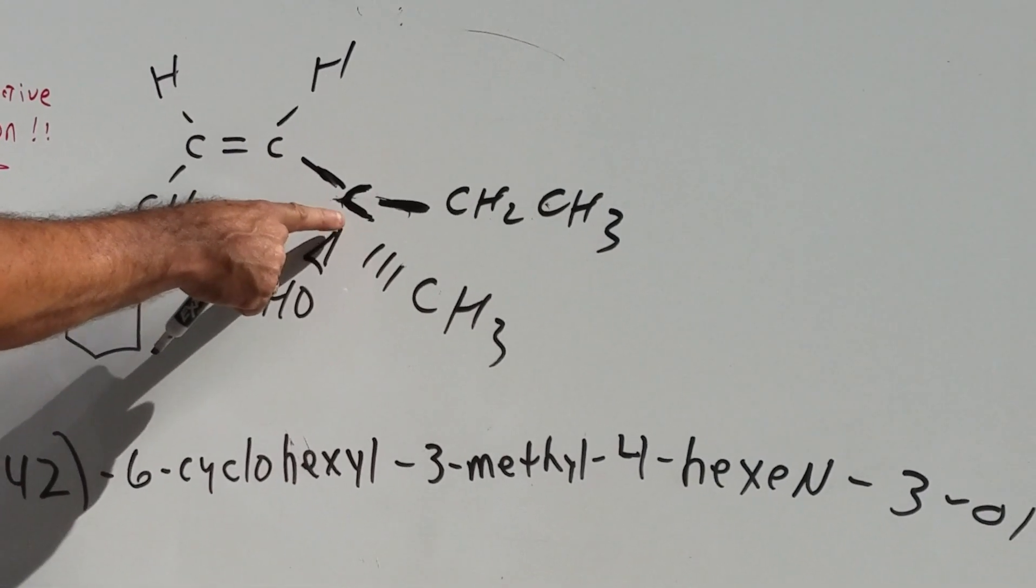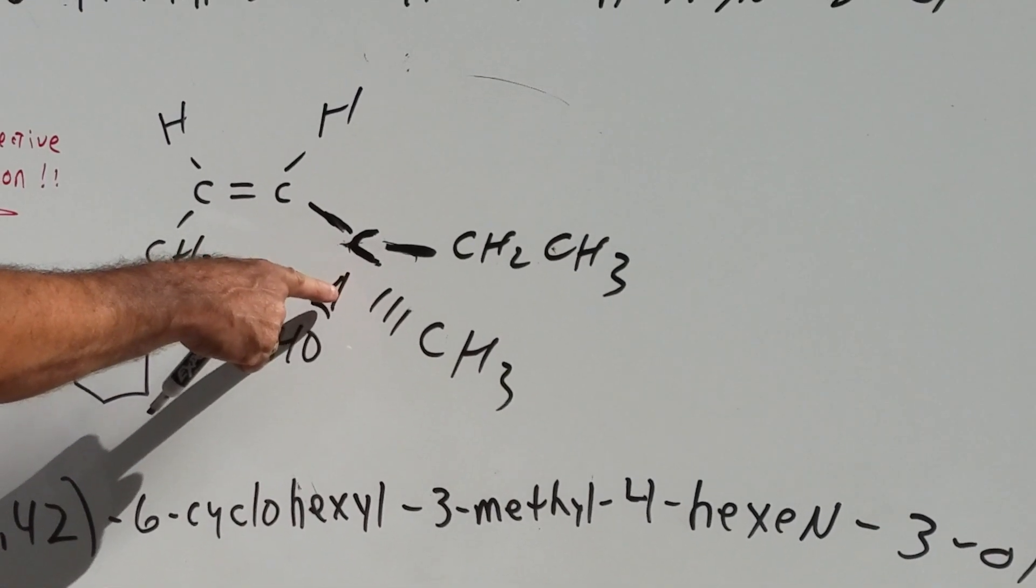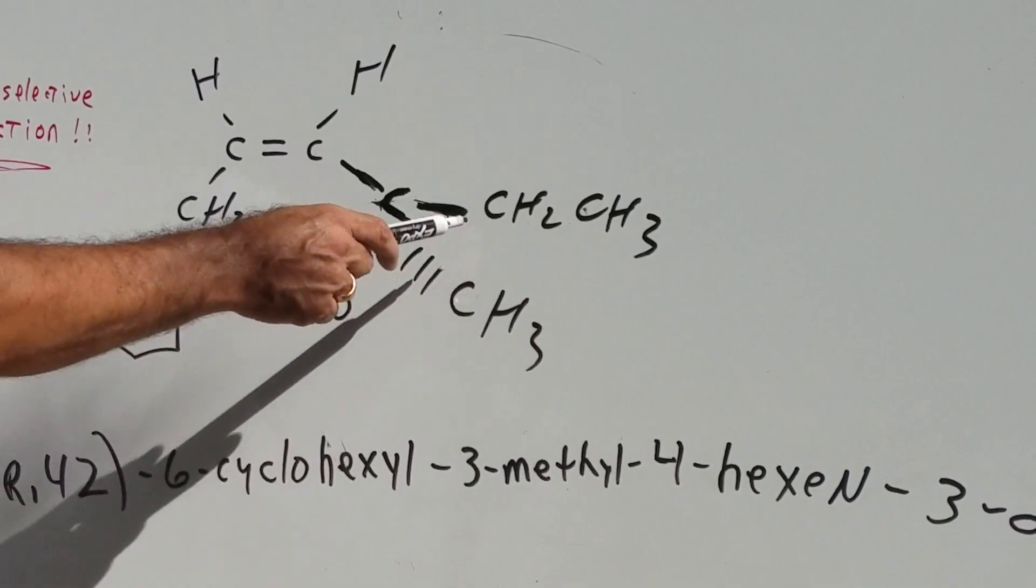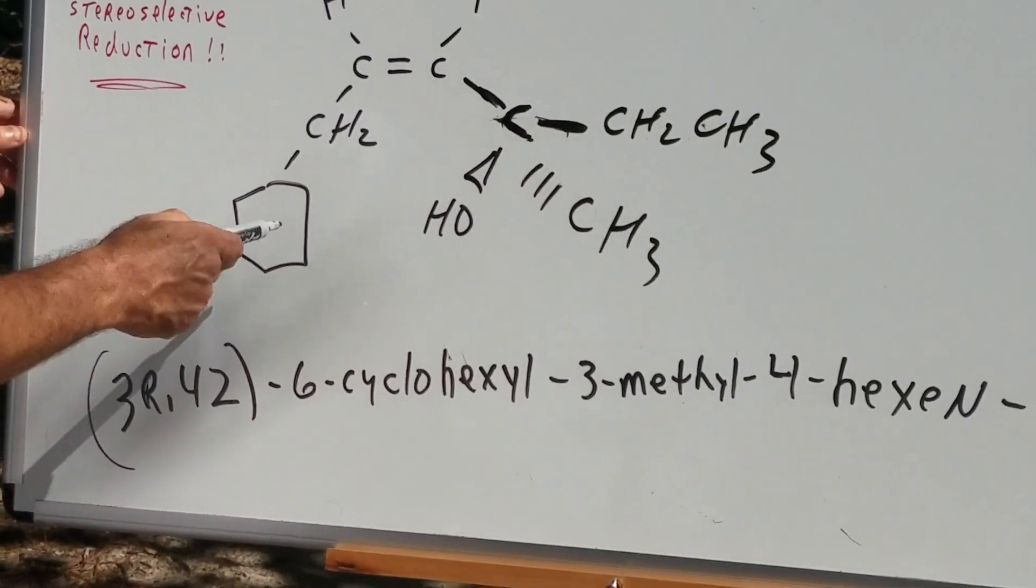So again, you're not breaking a bond in the chiral carbon, so this stays an R. So the final result would be a 3R, 4Z.